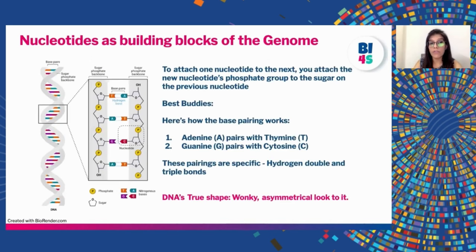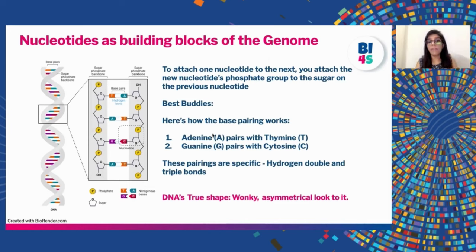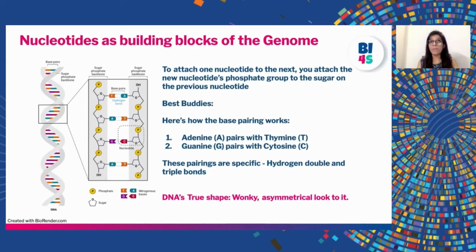To build a DNA polymer, you attach one nucleotide's phosphate group to the sugar of the previous nucleotide. There are four nitrogenous bases: adenine (A), thymine (T), guanine (G), and cytosine (C). These have specific base pairing: A binds with T via double hydrogen bonds, and G binds with C via triple hydrogen bonds. Because of this bonding, DNA has minor and major grooves in its double strand, making DNA's true shape slightly asymmetrical and wonky — not the perfect double helix we see in textbooks.